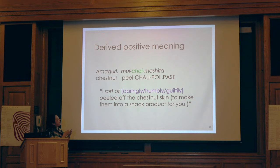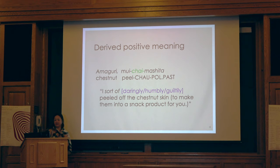They've 'humbly killed off the chestnut skin for you and made it into a product.' Chestnut skin is very hard and tough. So chao is used in this context — 'I regrettably did it,' but in a positive, good sense.